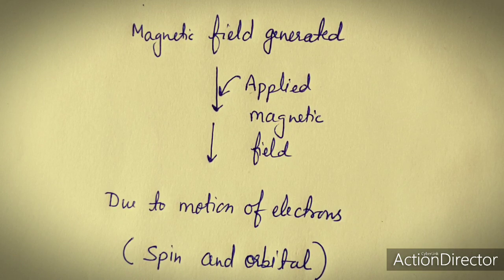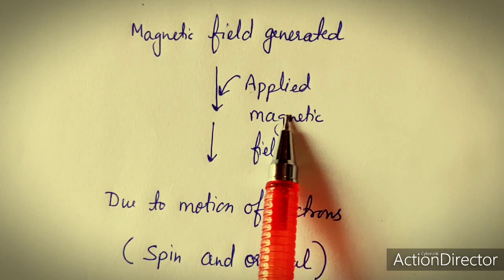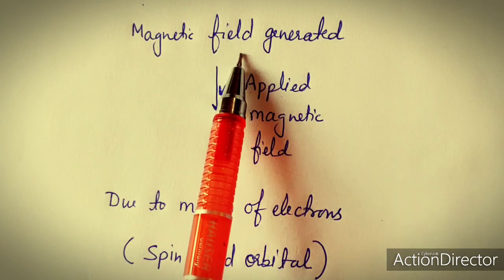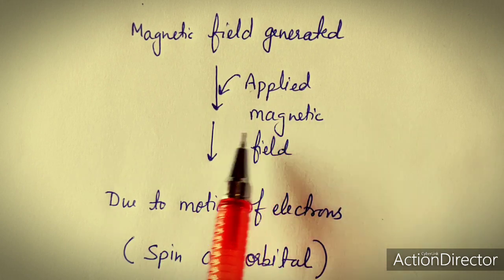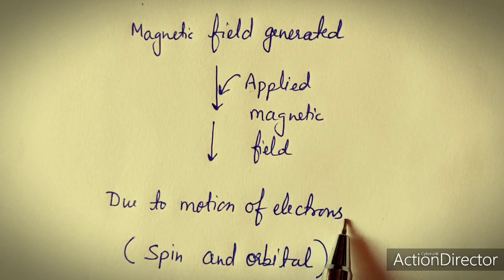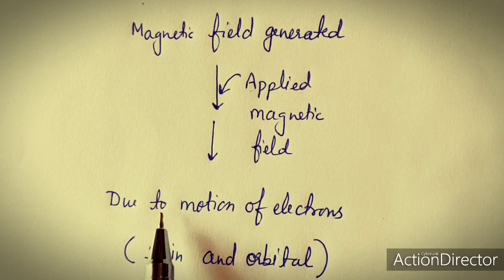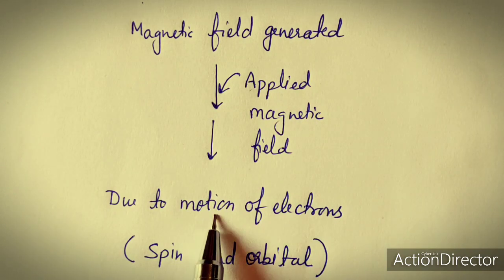How transition metal complexes or any magnetic substance acts upon the application of a magnetic field: when we apply some magnetic field to a substance, a magnetic field will generate due to the motion of electrons, because there are electrons in the metal complexes or in any substance. So the magnetic field is generated due to the motion of electrons.